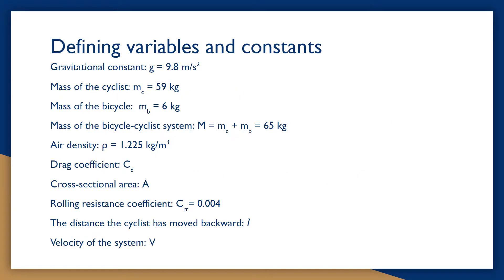There are variables and constants used in our computations. g is the gravitational constant, MC stands for the mass of cyclist, MB stands for the mass of bike. Then we use big M to define mass of the bicycle-cyclist system, and the air density is ρ. CD is the drag coefficient. A is the cross-sectional area. CR stands for the rolling resistance coefficient. L stands for the distance the cyclist has moved backward. And V is the velocity of the system.